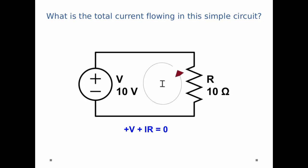I'm starting in the lower left-hand corner. I get plus V, because I'm going from the minus to the positive terminal of the battery, plus IR, because I'm moving against the current in this case, is equal to 0.